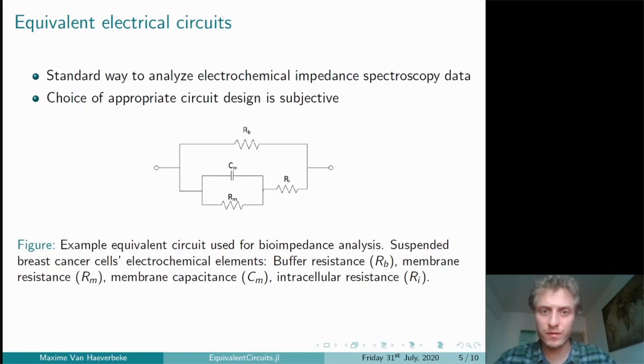A difficulty, however, is figuring out which configuration of an equivalent electrical circuit is appropriate for a given electrochemical system. Experts will typically use knowledge about the system and examine the impedance spectrum to propose an appropriate circuit configuration.